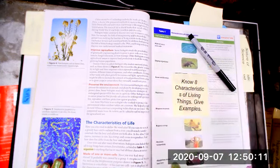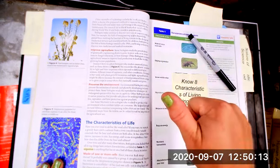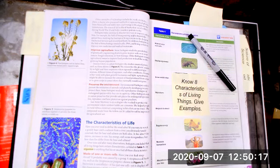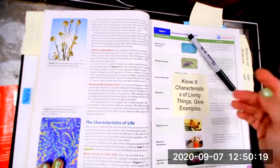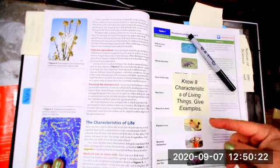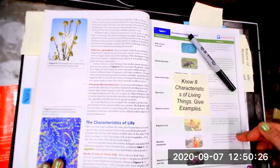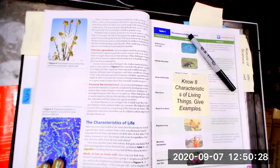Notice no one on this list is it moves, it eats, it breathes. Those are not characteristics of living things. It does not have to move, it just has to grow and develop. Does not have to eat, it just requires energy. It does not have to breathe, it just maintains homeostasis. Those are the characteristics of living things.